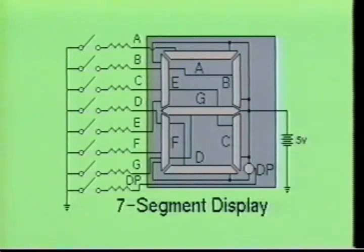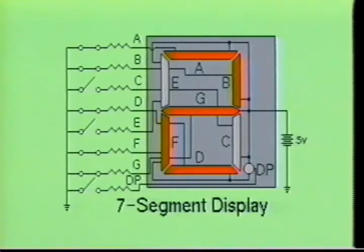By turning on the appropriate LED segments, any of the decimal numbers can be displayed. For example, by activating segments B and C, the decimal number one is shown.